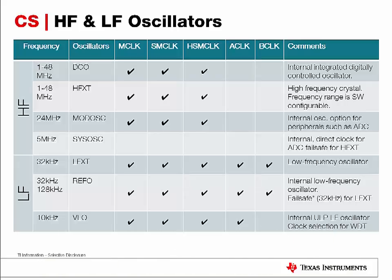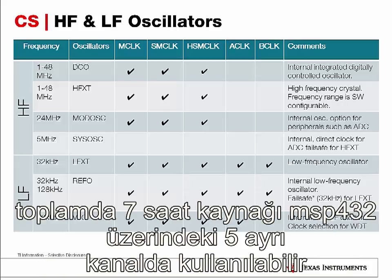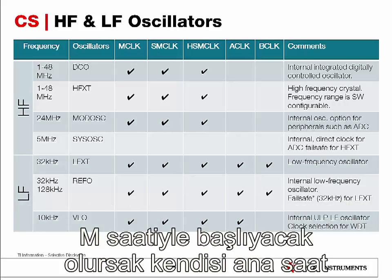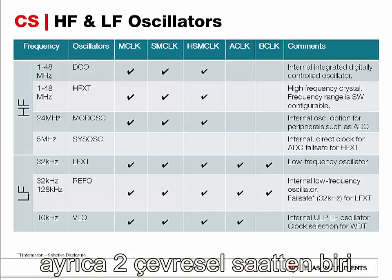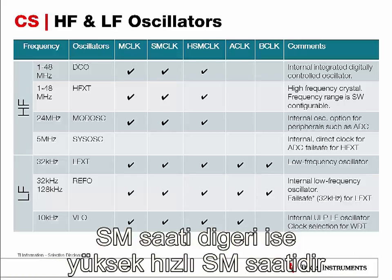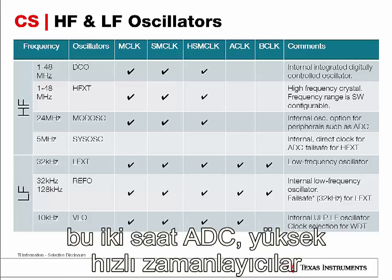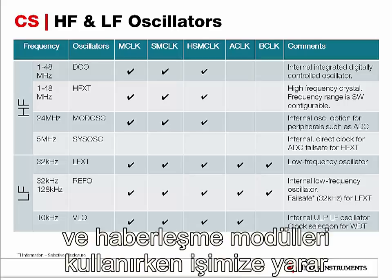So altogether, we have 7 clock sources, and these 7 clock sources can be used to feed into 5 different clock tabs on the MSP432. Starting off with MCLK, which is the main clock used to drive the CPU as well as possibly DMA operations. Then we have two peripheral clocks: SMCLK and high-speed SMCLK. These two are mainly used to drive different peripherals such as ADC, high-speed timers, as well as communication modules.